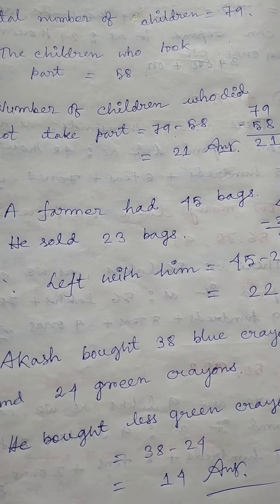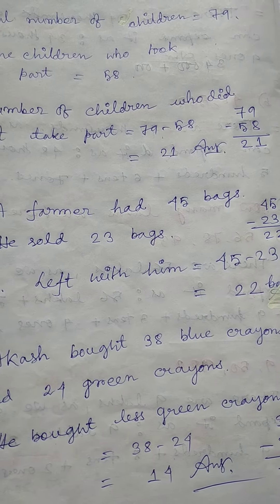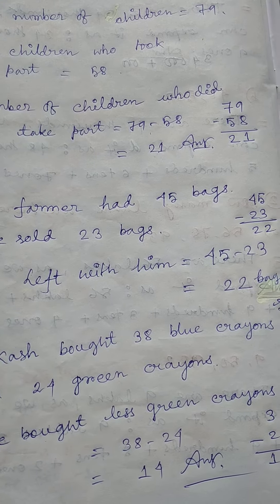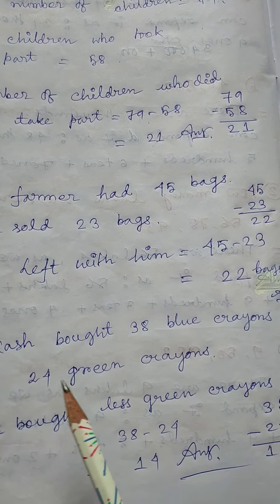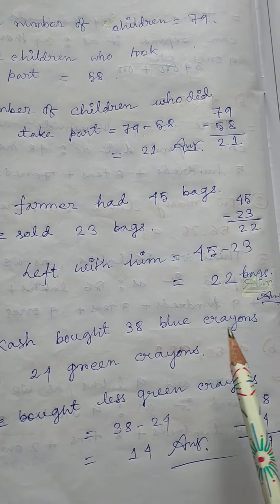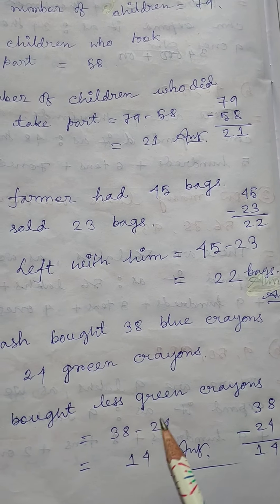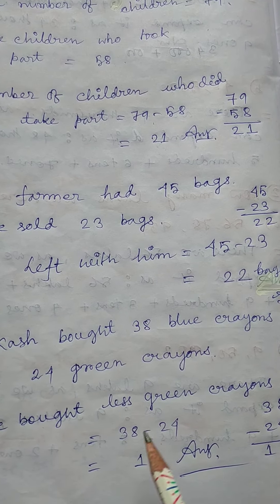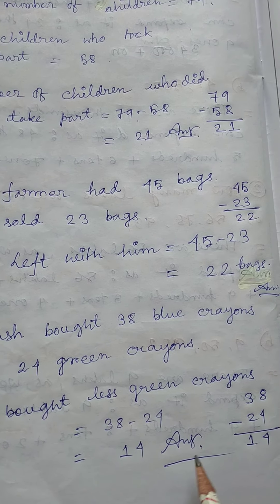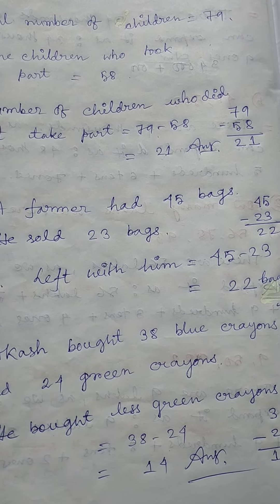Then number 6: Akash bought 38 blue crayons and 24 green crayons. How many less green crayons did he buy? So he bought less green crayons — kato abhe, shetamadar bheer kore tawabhe. Akash bought 38 blue crayons and 24 green crayons, so 38 minus 24 equal to 14. So the answer is 14.